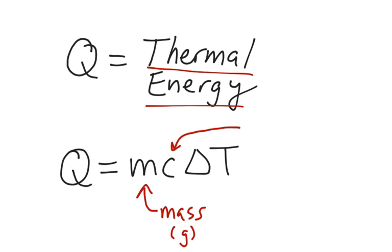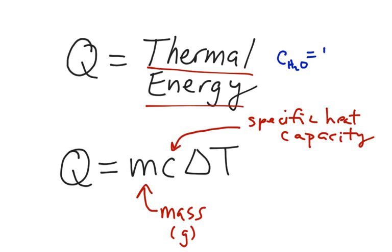Times a new symbol here, the C. That's the specific heat capacity. And you're often going to be dealing with the specific heat capacity of water. And water's specific heat capacity, in blue, I'll write it up here. The specific heat capacity of water is 4.18 joules per gram degrees Celsius.